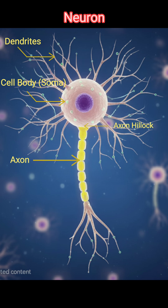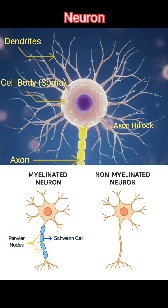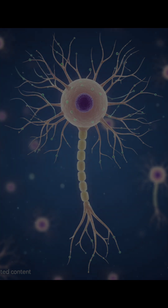The axon is a long, thin fiber that carries signals away from the cell body. It can be myelinated — covered with a myelin sheath — for faster signal conduction. Gaps in the myelin are called nodes of Ranvier, which help signals jump via saltatory conduction. At the end is the axon terminal, or synaptic knob, which releases neurotransmitters to communicate with the next neuron, muscle, or gland.